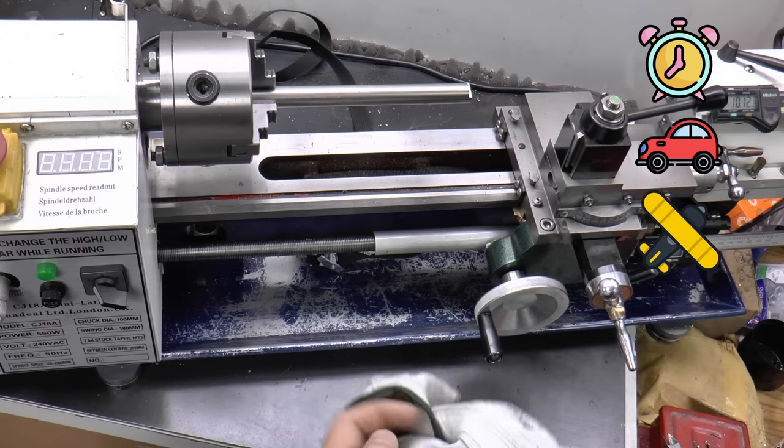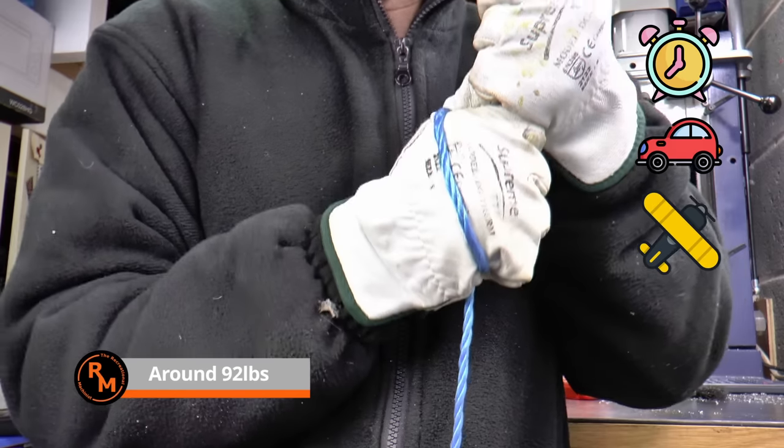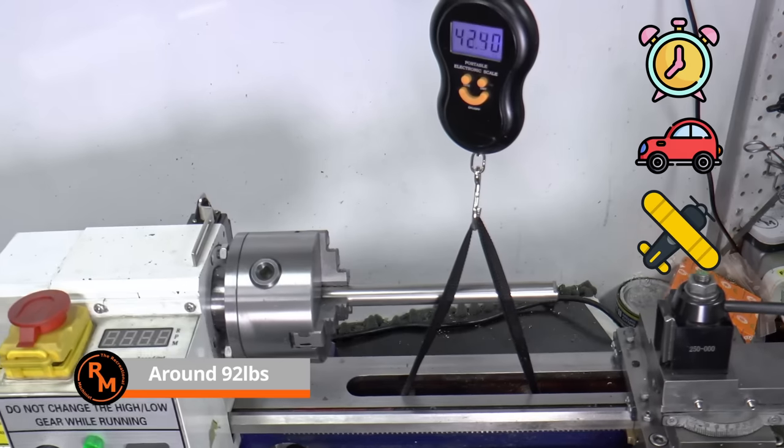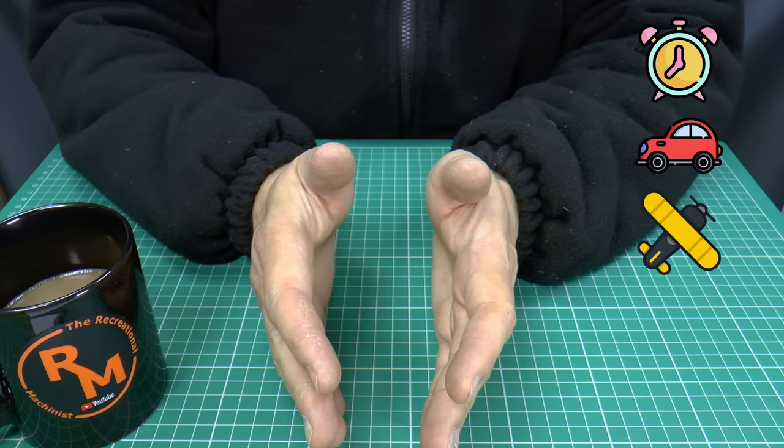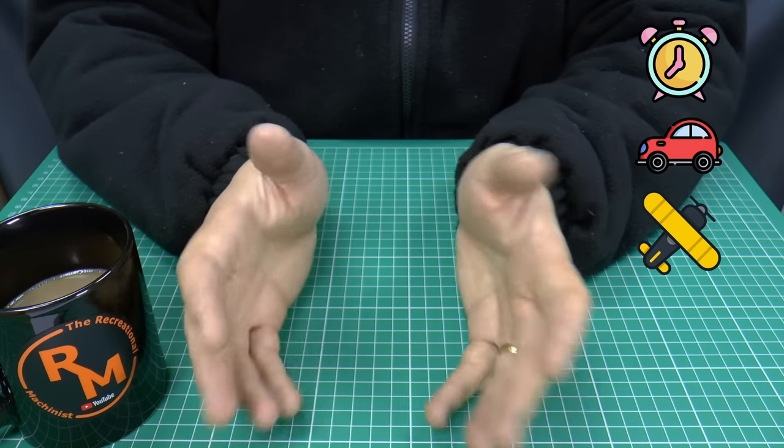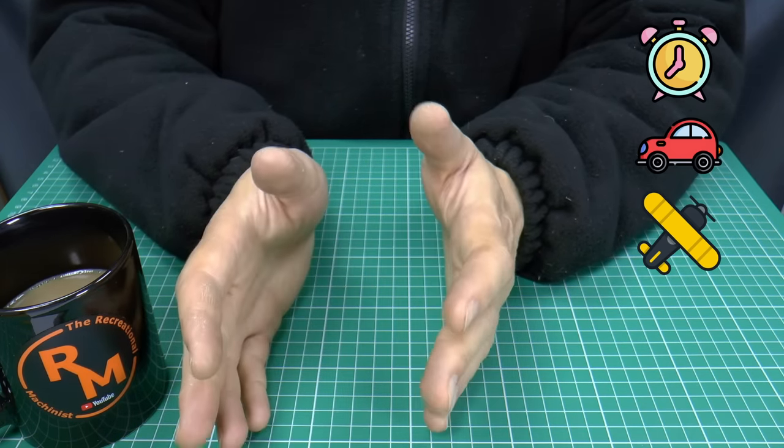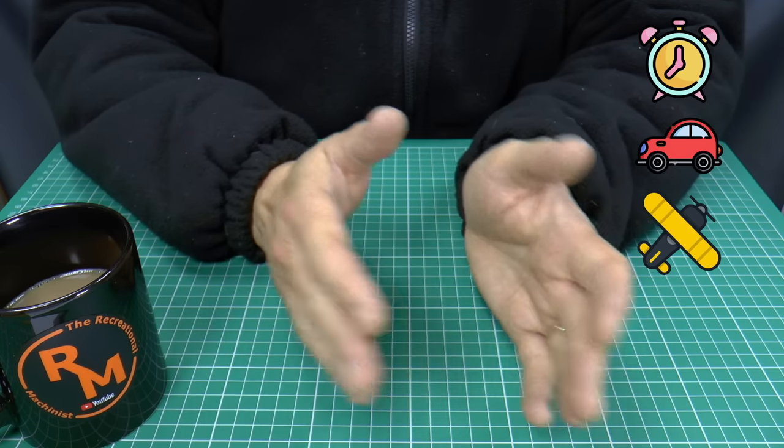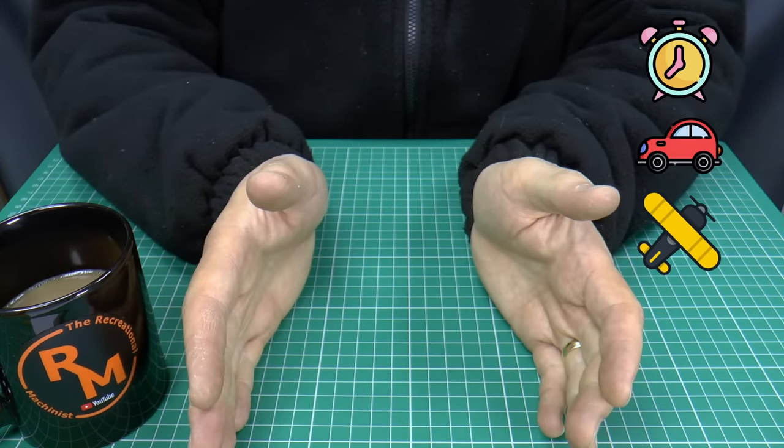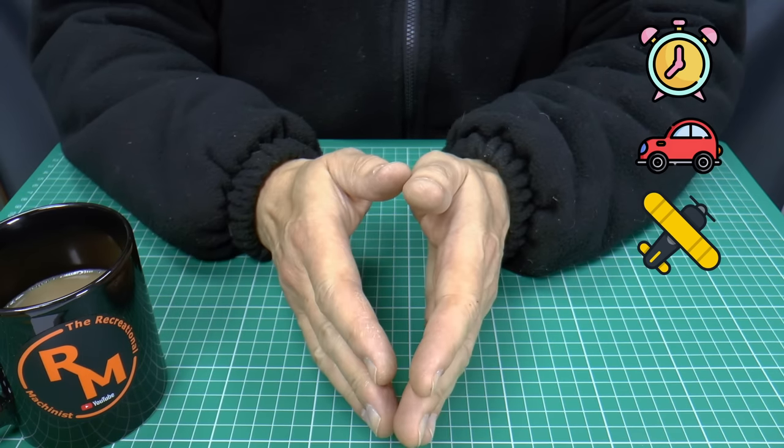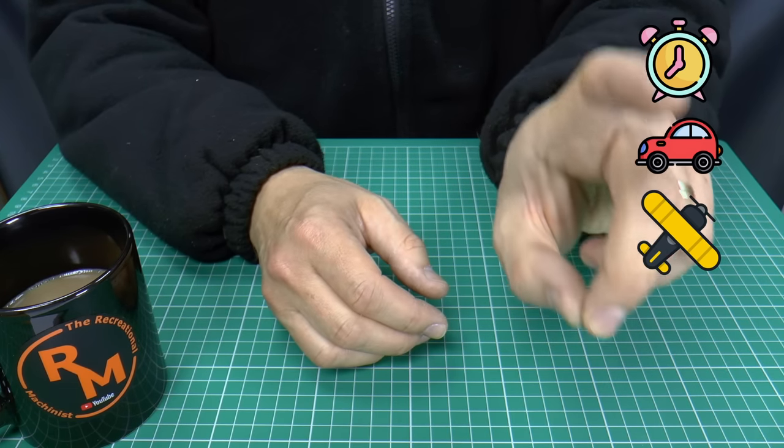My little half kilowatt machine weighs just 42kg and whilst you can lift it you wouldn't want to carry it far. In a small workshop that has to fulfil many roles this can be a real advantage but there is definitely a significant trade-off in performance for reduced size and weight. And you need to remember that it's easier to make small parts on a big lathe than it is to make big parts on a small lathe. It all depends on what you're trying to do.